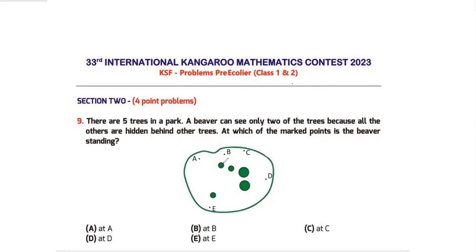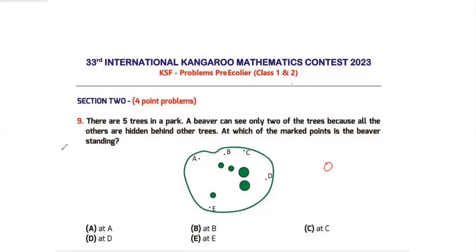Question number 9: there are five trees in a park. A beaver can see only two of the trees because all the others are hidden behind other trees. At which of the marked points is the beaver standing? The key concept is: if a smaller thing is placed in front of a bigger thing you see both, but if the smaller thing is placed behind a bigger thing, you only see the bigger thing.